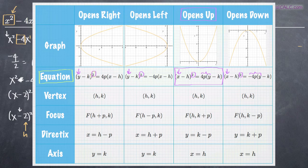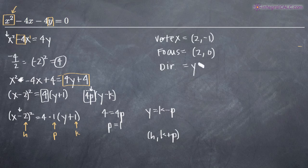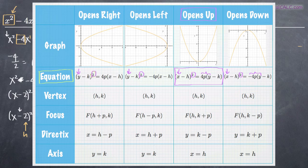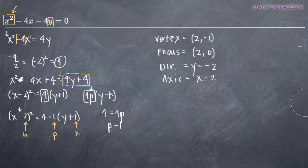From the chart, the directrix is at y equals k minus p. With k equal to negative 1 and p equal to 1, we get negative 1 minus 1, so the directrix is the line y equals negative 2. The axis is at x equals h, which means the axis is the line x equals 2.